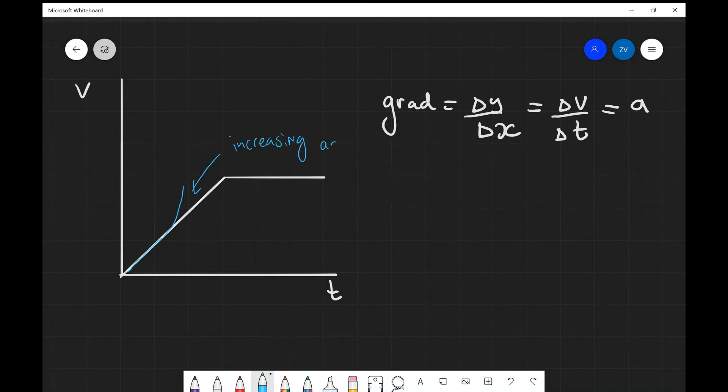So increasing acceleration. And if the gradient is decreasing, so for, let's say, start of this line at some point, the acceleration is decreasing, maybe the drag is increasing or another physical reason, it will look something like this. So if the gradient of the tangent is getting less and less steep at every single individual point, then this means that this is decreasing acceleration.